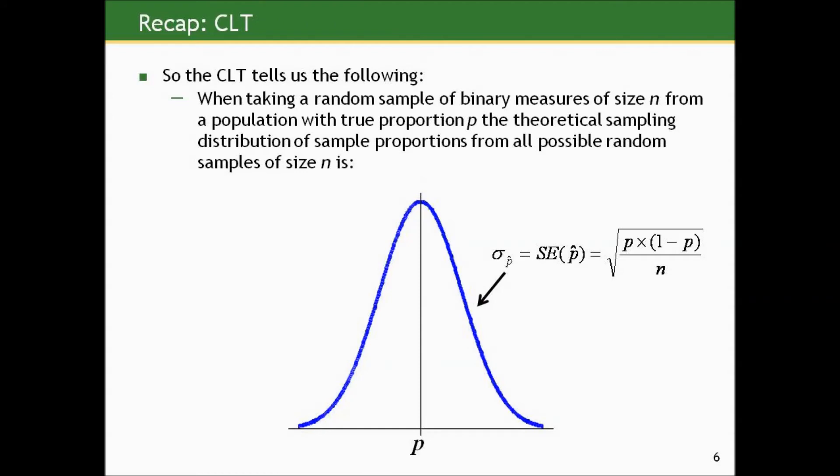So the central limit theorem tells us the following. When taking a random sample of binary outcomes of size n from a population where the true proportion of observations with the outcome is p, the theoretical sampling distribution of sample proportions from all possible random samples of size n is given by a normal curve centered at the true proportion, and the spread in the normal curve described by the standard error is given by that formula.